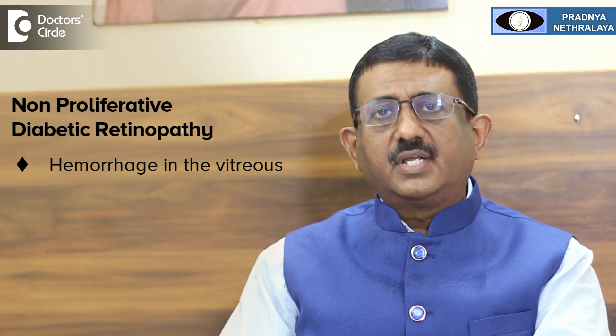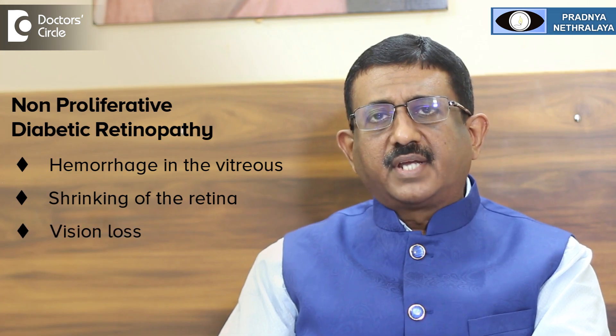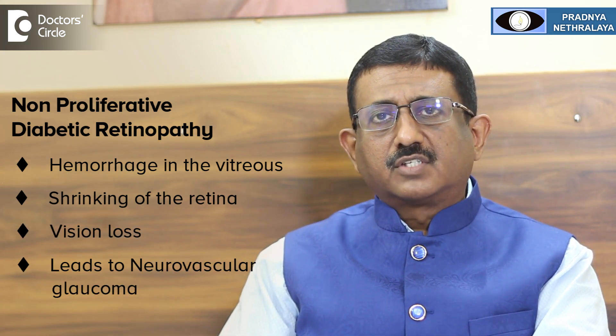When the oxygen supply to the retina decreases, the retina releases certain chemicals which cause new blood vessels to grow to supply oxygen. This condition is called proliferative diabetic retinopathy, which has serious complications. It can lead to hemorrhages in the vitreous, shrinking of the retina due to fibrosis causing vision loss, and a condition called neovascular glaucoma. Another entity is diabetic maculopathy, where there is leakage of fluid in the central part of the eye called the macula — the light-sensitive area very important for clear vision.